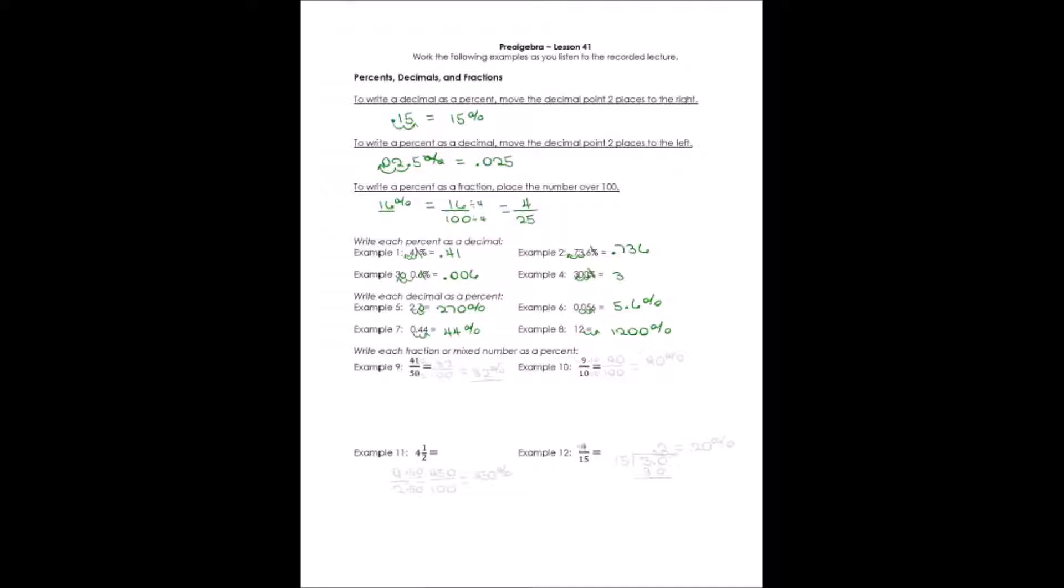Now, when we have fractions that want to be written as percentages, one thing we have to remember, an easy way to do this is look and see. Remember that any number over 100, well, that number is the percentage. Could you easily get the fraction you're working with to have a denominator of 100? In this particular case, we can. We would say 50 times 2 would give us 100. So I can multiply my numerator times 2, and that gives me 82 one-hundredths. I know what percentage that is because it's written over 100. All I have to do is write it as a percent.